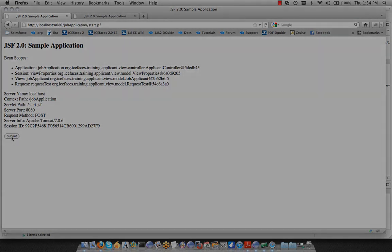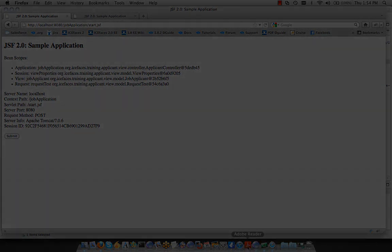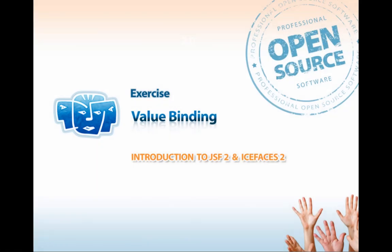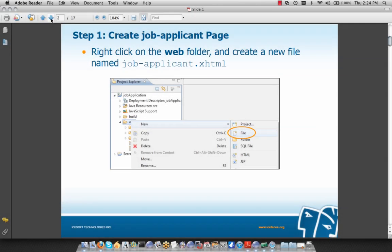That concludes our exercise on JSF bean scopes. Our next exercise will be to add value bindings to our application. Prerequisites include successfully completing our first project along with the exercise on JSF bean scopes. Step one is to create a blank job applicant page — we'll right-click on the web folder and create a new file named job-applicant.xhtml, building this page up over the course of the exercise.